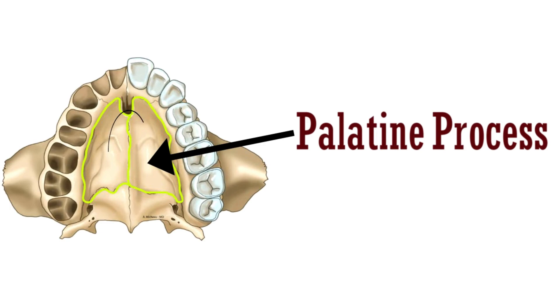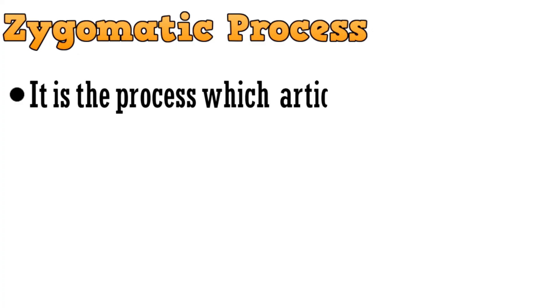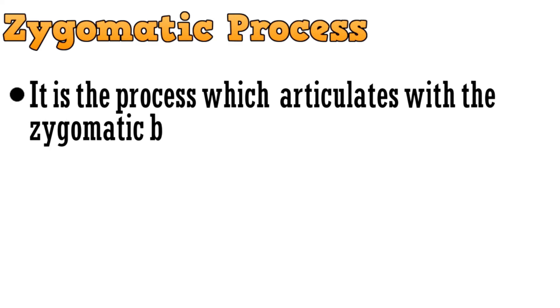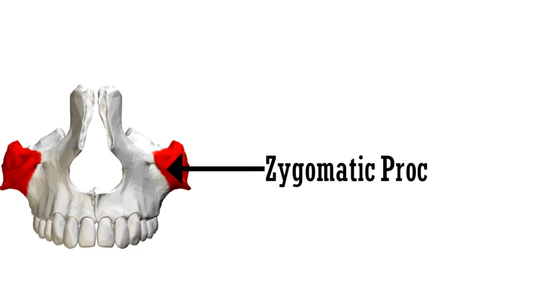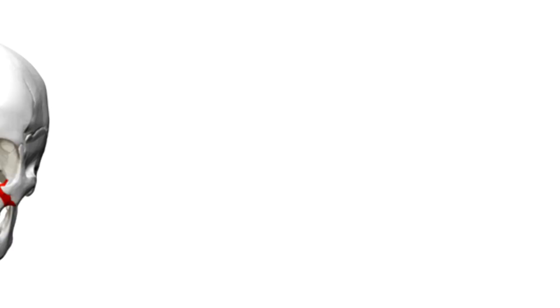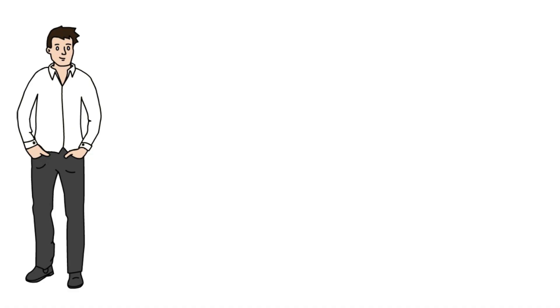The last process is the zygomatic process. It is the process which articulates with the zygomatic bone. The red colored prominence shown is the zygomatic process, and it articulates with the zygomatic bone. With this we complete the anatomical features of the maxilla.